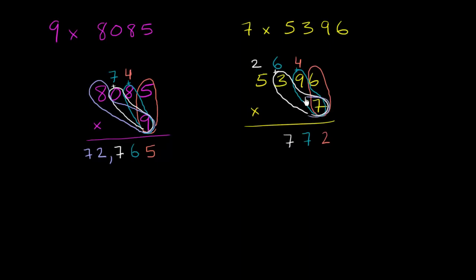And then finally, we have 7 times 5, which is 35, but we have to add the 2. 35 plus 2 is 37. So 5,396 times 7 is 37,772.